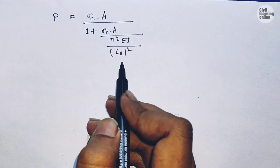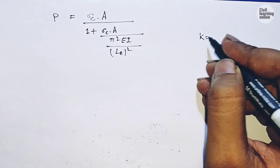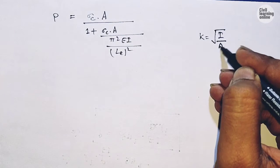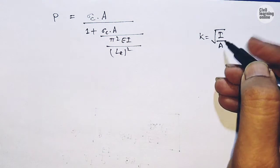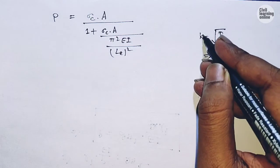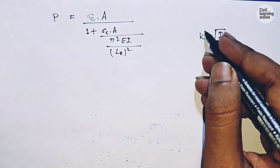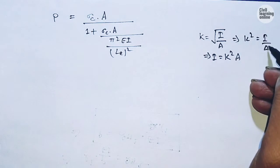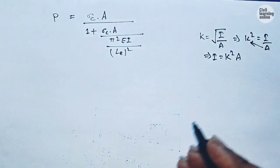The radius of gyration K equals the square root of I/A, where K is the least radius of gyration, I is the moment of inertia, and A is the area of cross-section. Squaring both sides, K² = I/A, so I = K²A.